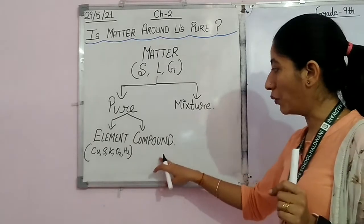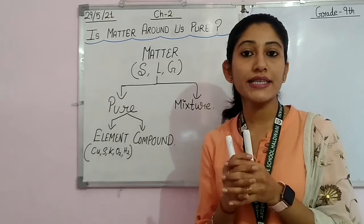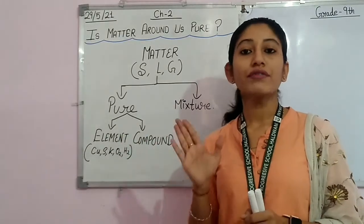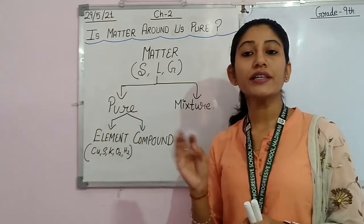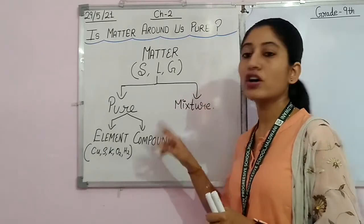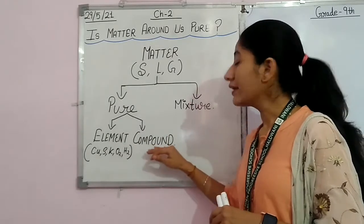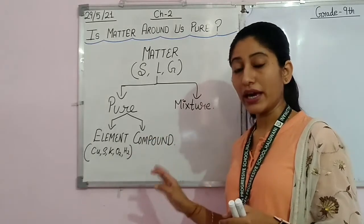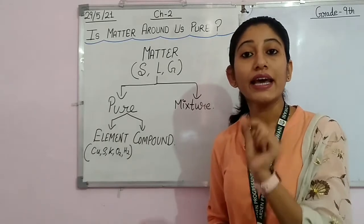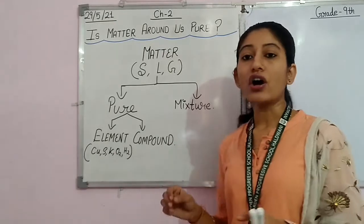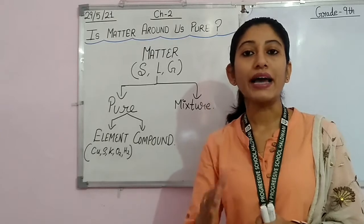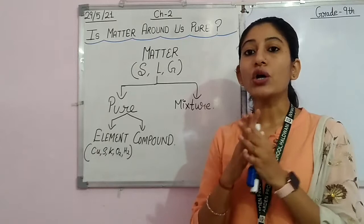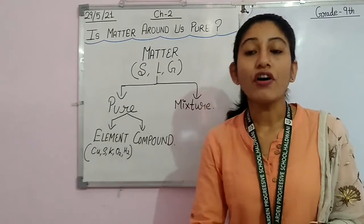Another type is the compound. We know that a compound is formed by the mixing of two or more different types of elements. Then how can we say a compound is pure? Because when I said pure substance is where a single type of matter is present — the compound cannot be broken down into its simpler form by physical methods.